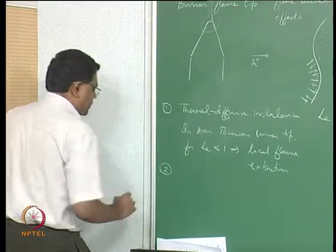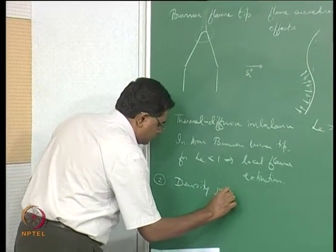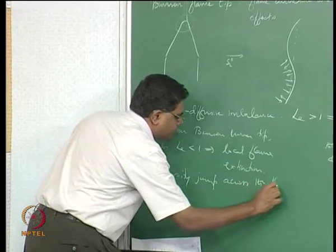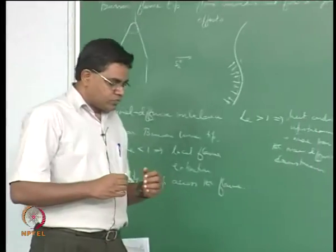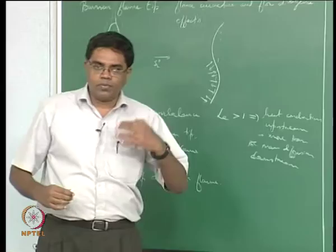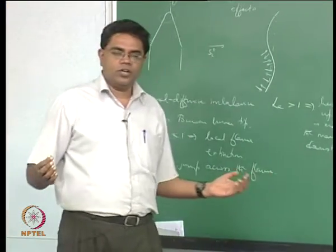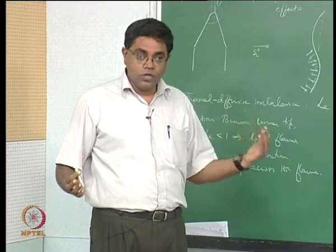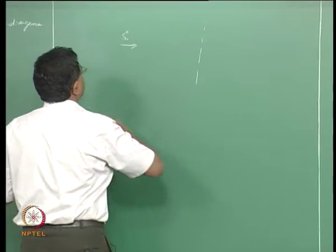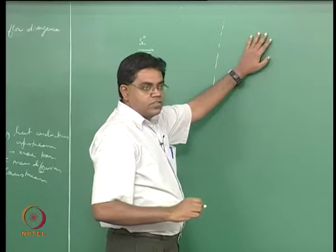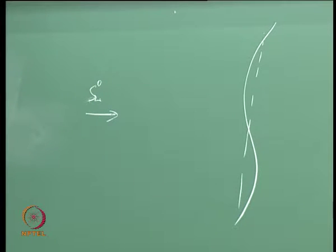The second effect to worry about is the density jump across the flame — what is the consequence of having a decrease in density for the products relative to the reactants as the flow gets past the flame? We again think of a nominally flat flame with SL⁰, but now we consider that the density of the products is less than the density of the reactants, and we perturb the flame to be non-planar.